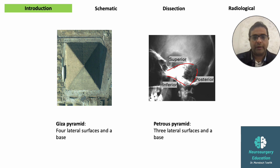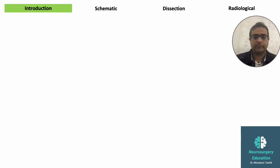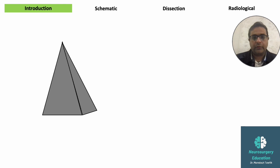On the left is a photo of the Giza pyramid with four walls as well as a base. The petrous pyramid, on the other hand, has only three walls and a base. The superior surface faces the middle fossa, the posterior surface faces the posterior fossa, and the inferior surface faces the neck. The base is facing laterally.